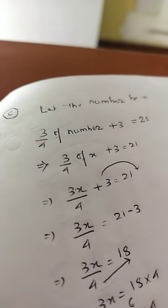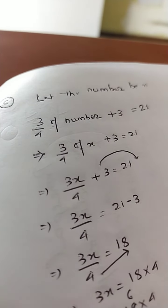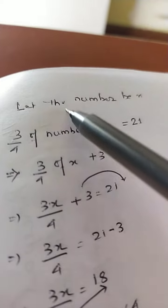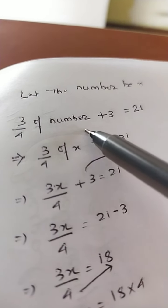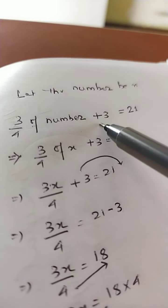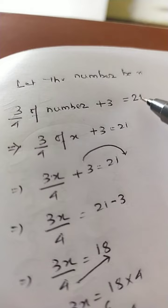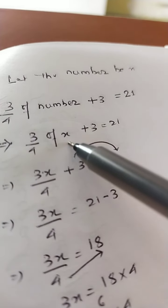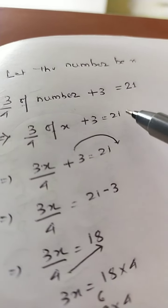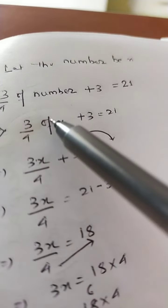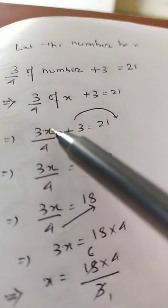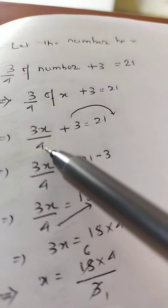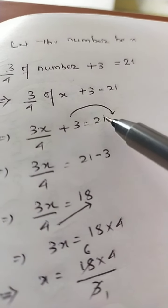Sum number (c): If I take three fourths of a number and add 3 to it, I get 21. Let the number be x. Three fourths of x plus 3 equals 21, that is (3x/4) + 3 = 21.